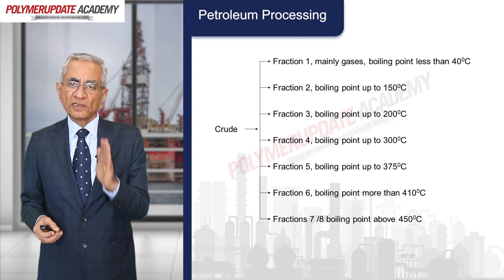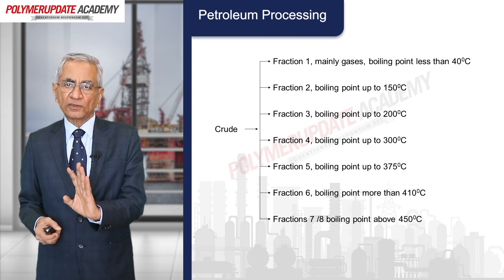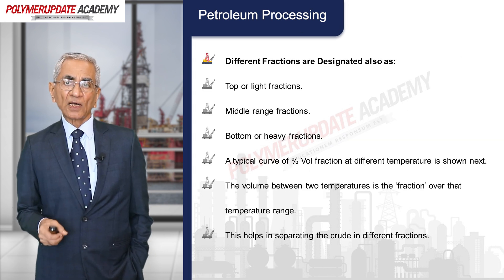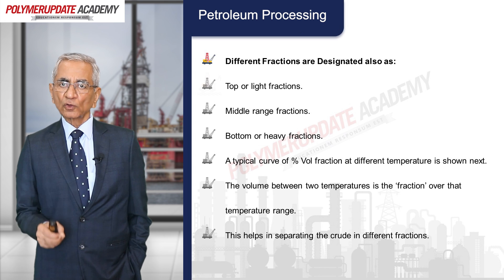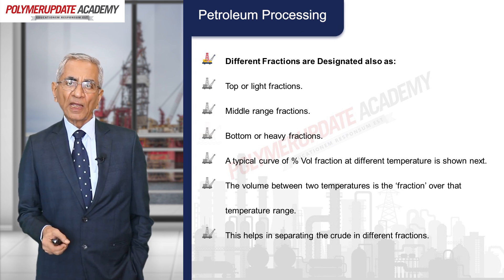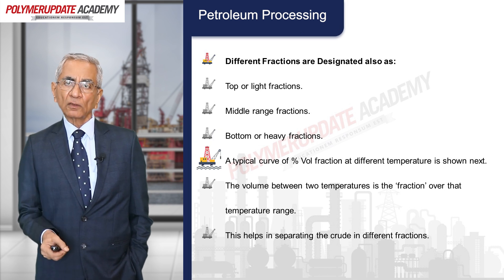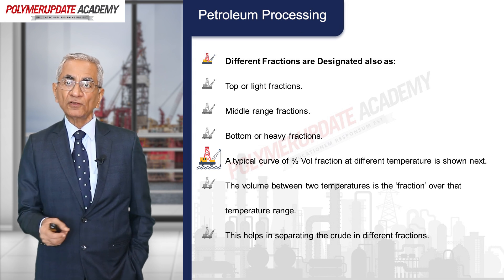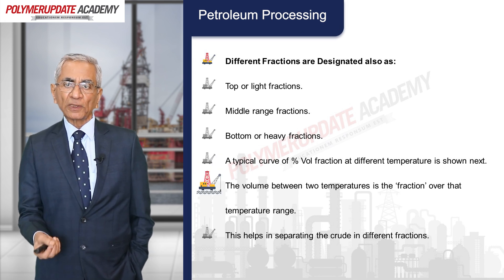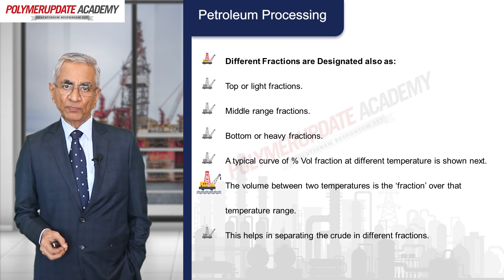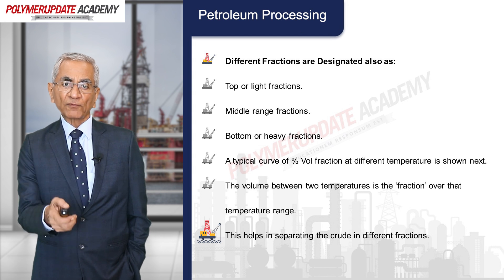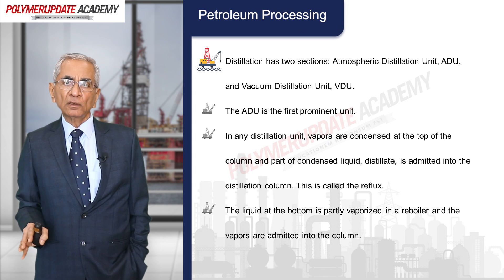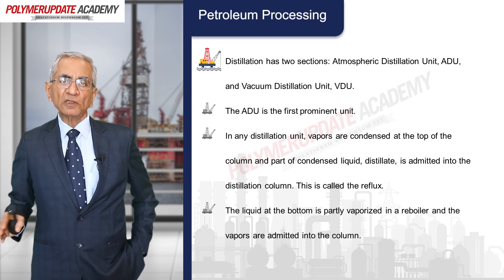Fractions with boiling points over 450°C are sometimes subjected to vacuum distillation so that the effective boiling point reduces and separation of materials is possible. Different fractions are designated as top or light fractions, middle range fractions, and bottom or heavy fractions. A typical curve of percent volume fraction over different boiling point temperatures for crude oil is shown, helping in separating the crude into different fractions.